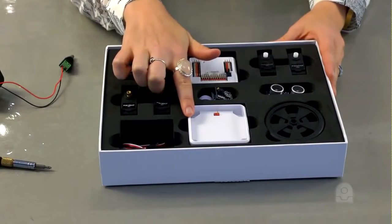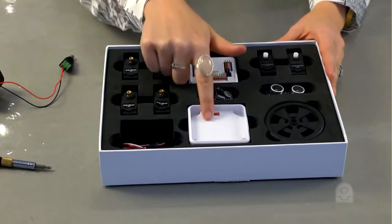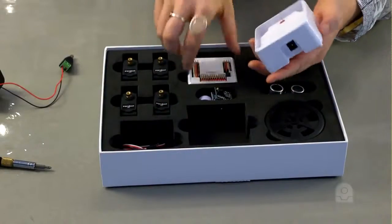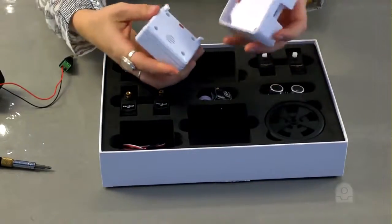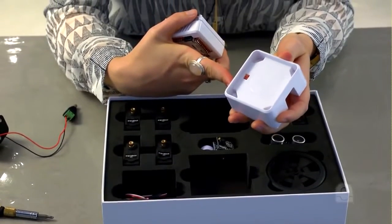This is the EZB power base for the EZB V4. The EZB V4 plugs into the top of it. Inside the power base is a fuse for short circuit protection.